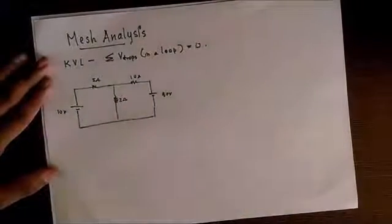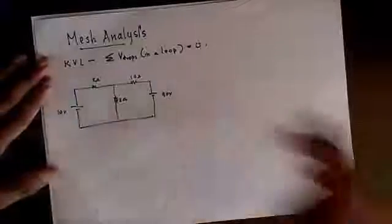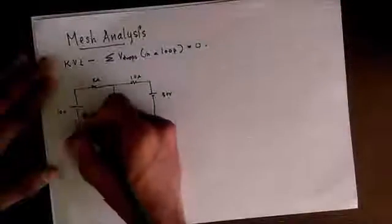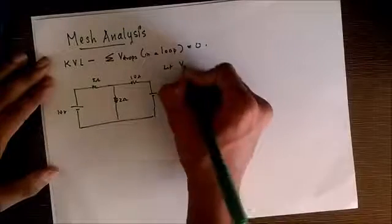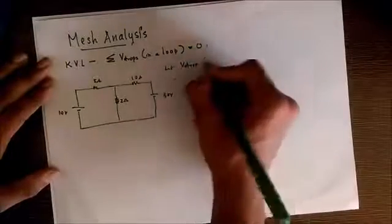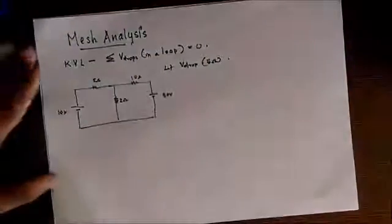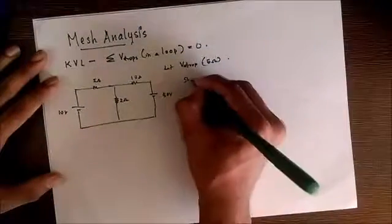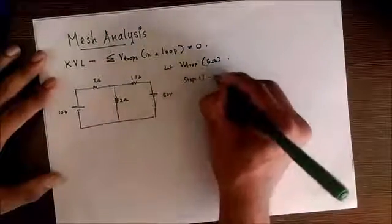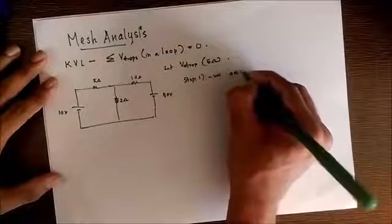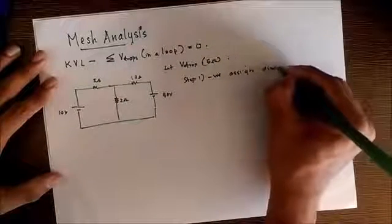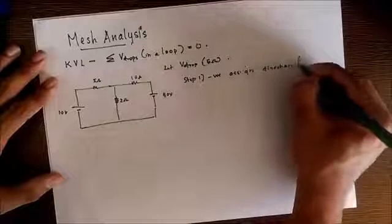Now there are three basic steps for solving this circuit. Let the question be: find the voltage drop across the 5 ohm resistor. So step one, we assign direction for loop currents.